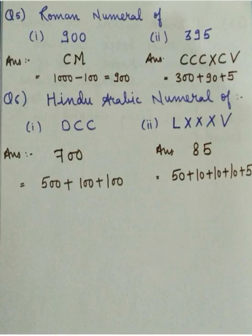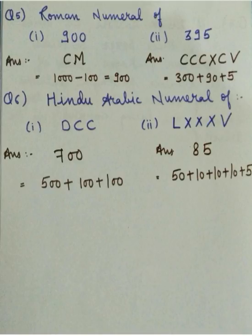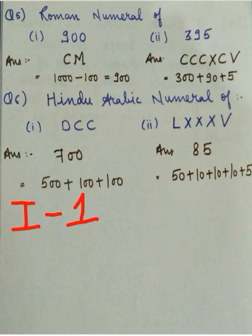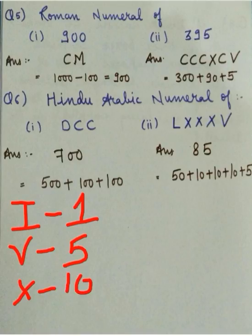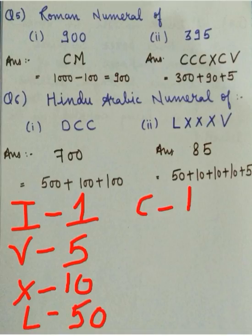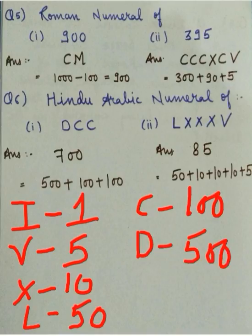We use these symbols to convert a Hindu-Arabic number into Roman numerals. Let's revise what Hindu-Arabic numbers these symbols represent: I represents 1, V represents 5, X represents 10, L represents 50, C represents 100, D represents 500, and M represents 1000.